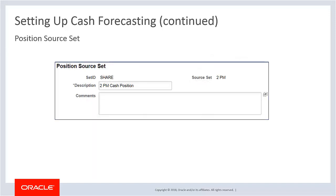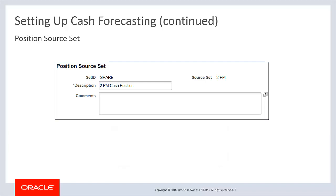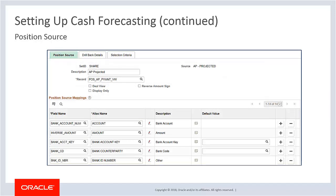The position source set page is used to define position source sets such as actuals, forecast, projected, or intraday. Position source sets represent categories to group position source data. They can be used to view or compare data between two source sets on the cash forecasting results page. The position source page is used to define position records, drill back to details, and determine selection criteria for position sources. A position source represents a source of data used to calculate a cash forecast and position amount, and holds details to drill back to source data and SQL criteria for retrieving forecast and position amounts.